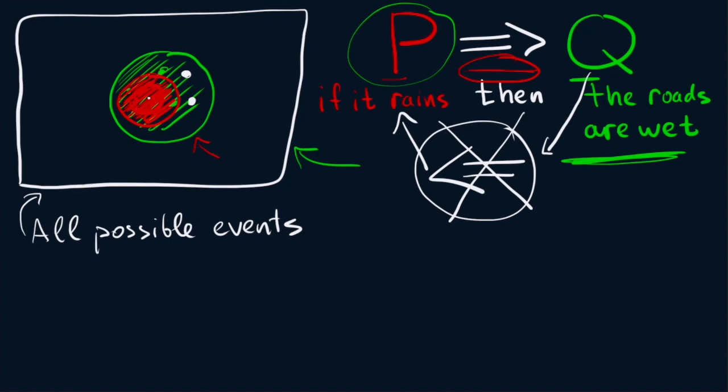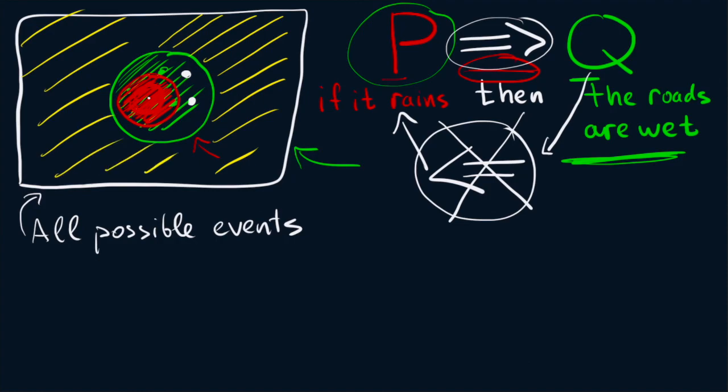But there is, however, one thing that we can deduce from the original implication. And in order to see that, I suggest we look at the outsides of these two circles. So in yellow, I will have not Q, because when we are in this yellow zone, we do not belong to the green circle, so we are not Q.